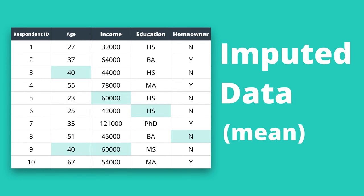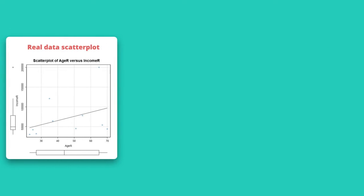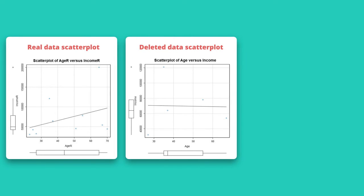Here we see a scatter plot of the real data. The slope of the line would indicate in general that as age increases, so does income. But if we look at the scatter plot where we just delete records that have missing data, we can see that this scatter plot of the leftover data actually has the slope of the line going in the wrong direction, indicating that as age increases, income goes down.